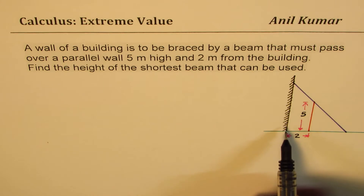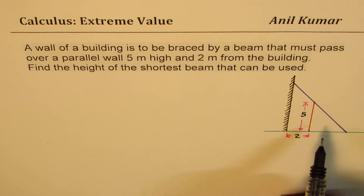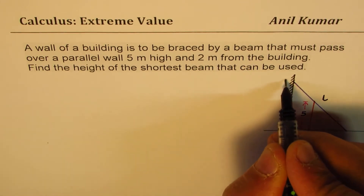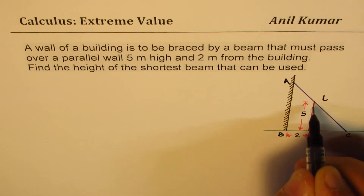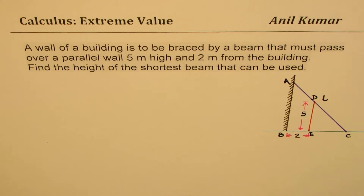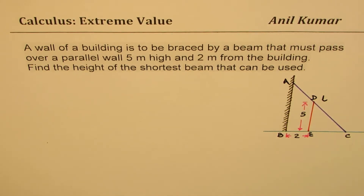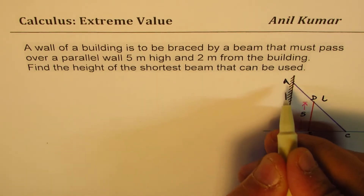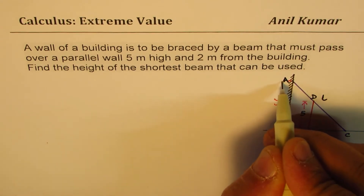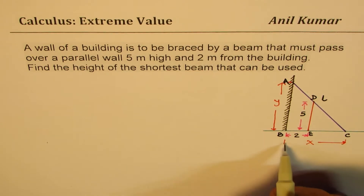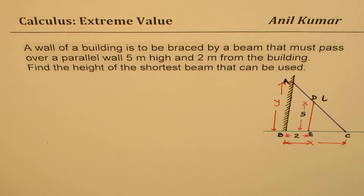Here is the diagram — the beam and the wall in between is 2 meters away and 5 meters high. We need to find the shortest length of the beam, so let's call this length as L. Let me name the points A, B, C, D, and E. We can relate length with height and width using similar triangles. Let the height where the beam touches be Y, so Y is AB, and the distance of the foot of the beam be X.